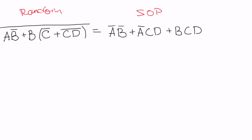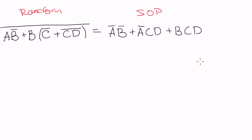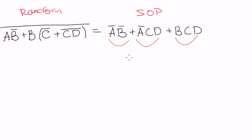Hello! Remember last time we were talking about sum of products form for Boolean expressions? As you remember, sum of products form was useful because it's easy to evaluate. When either of the terms equals to 1, then we can forget about all other terms because we know that the whole expression will equal to 1.